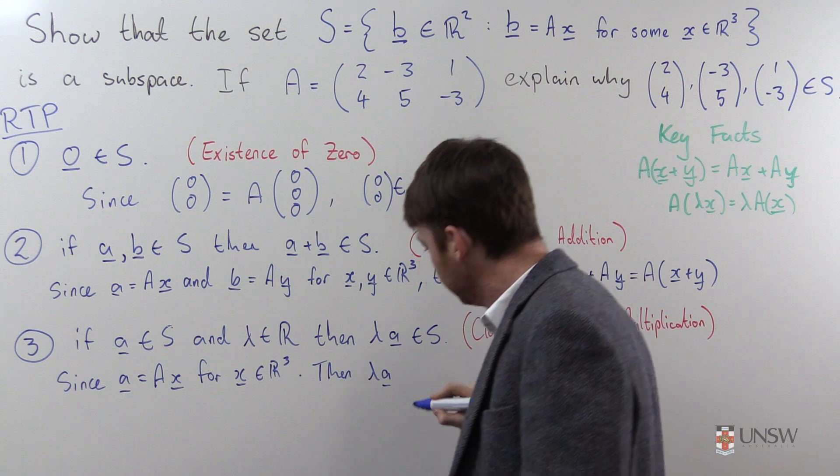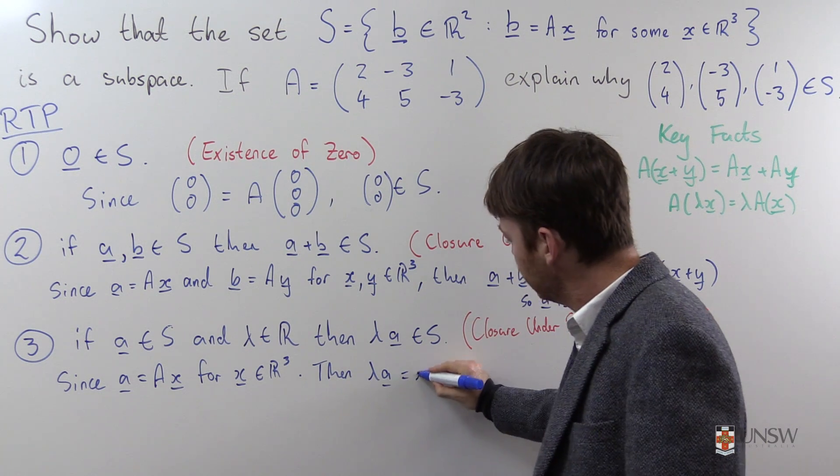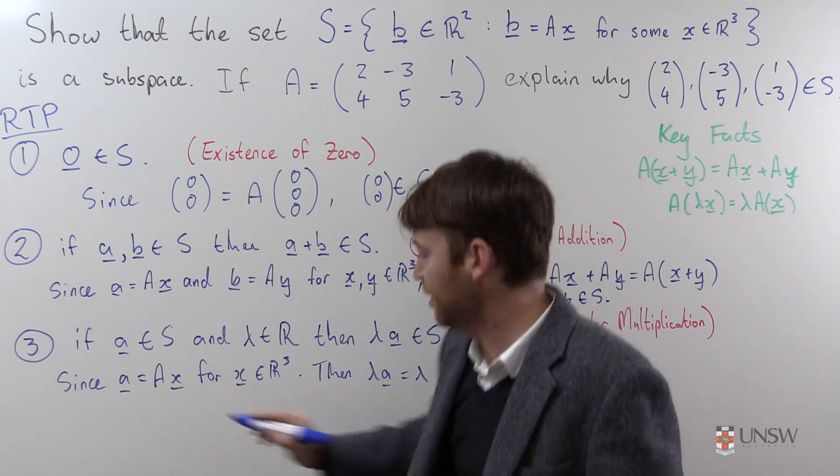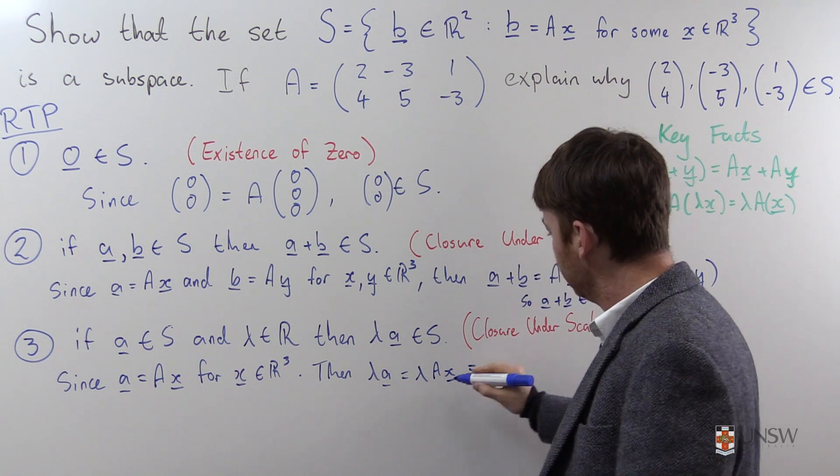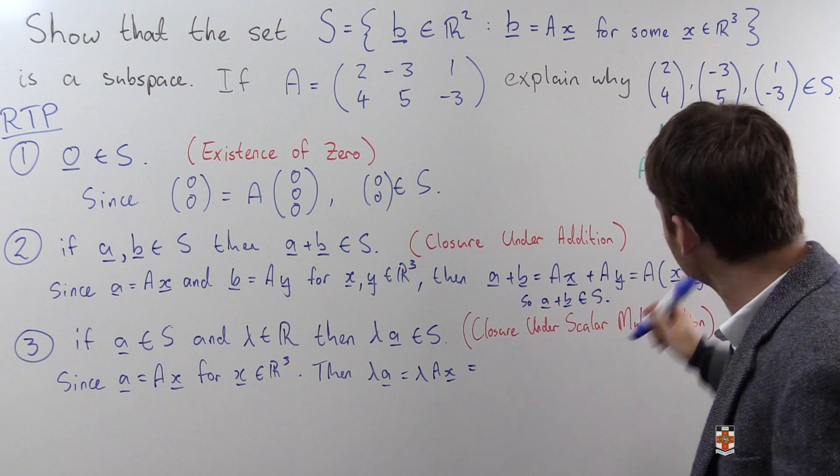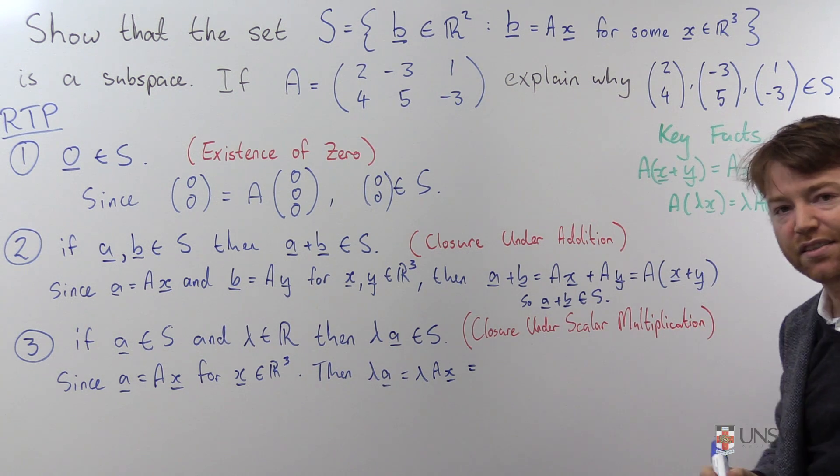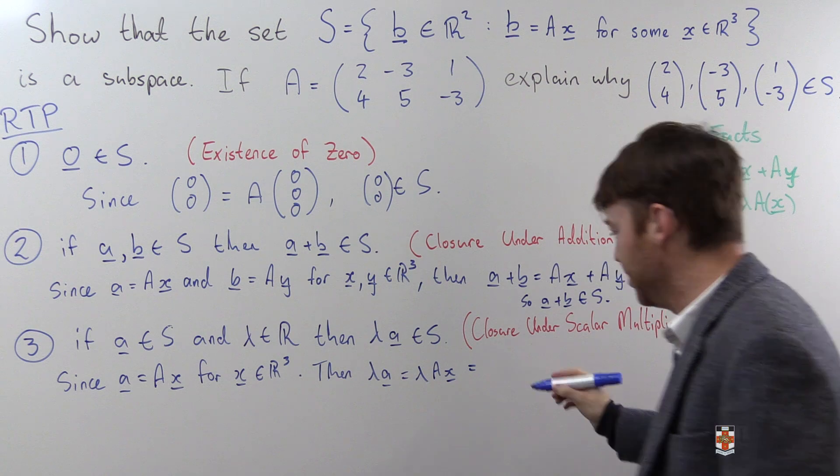Then lambda A is equal to lambda, well, I know what A looks like, it looks like that. A X, which is equal to A of lambda X, using my key facts about matrices.